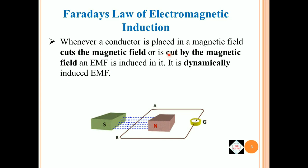Whenever a conductor is placed in a magnetic field, cuts the magnetic field or is cut by the magnetic field, an EMF is induced in it. It is dynamically induced EMF. As you can see in the animation, the conductor AB is cutting the magnetic field set up by these south and north pole permanent magnets. Therefore, an EMF is getting induced in the conductor which allows a current flow through it which can be detected by the galvanometer.